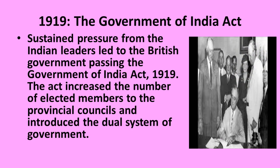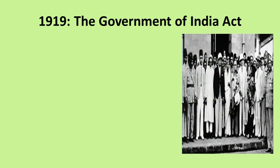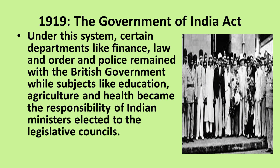Next, we will discuss about the Government of India Act. Every certain period, the British passed a Government of India Act. Sustained pressure from the Indian leaders led to the British government passing the Government of India Act in 1919. The Act increased the number of elected members to the Provincial Council and introduced the dual system of government. Under the Government of India Act 1919, certain departments like finance, law, order, and police remained under the control of the British government, while education, agriculture, and health came under the responsibility of the Indian ministries.